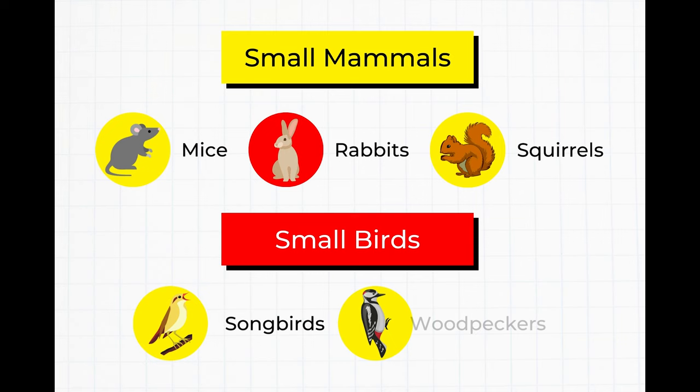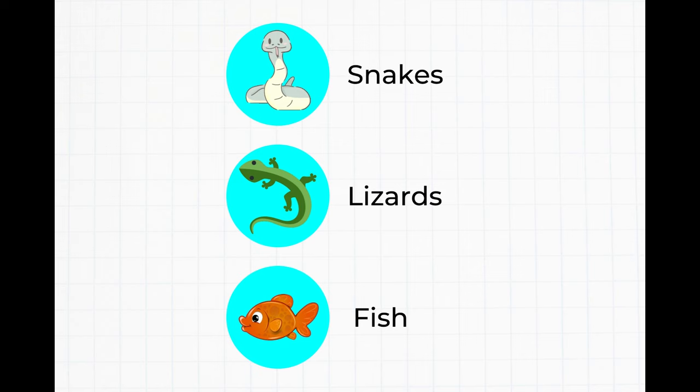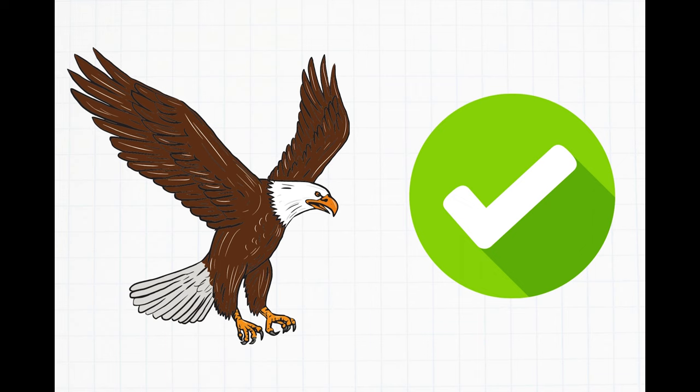In addition, some hawk and eagle species adapted to hunt reptiles such as snakes and lizards, while others evolved to hunt fish. That said, the main difference between their diets is that eagles can also hunt large mammals and birds, while hawks cannot.